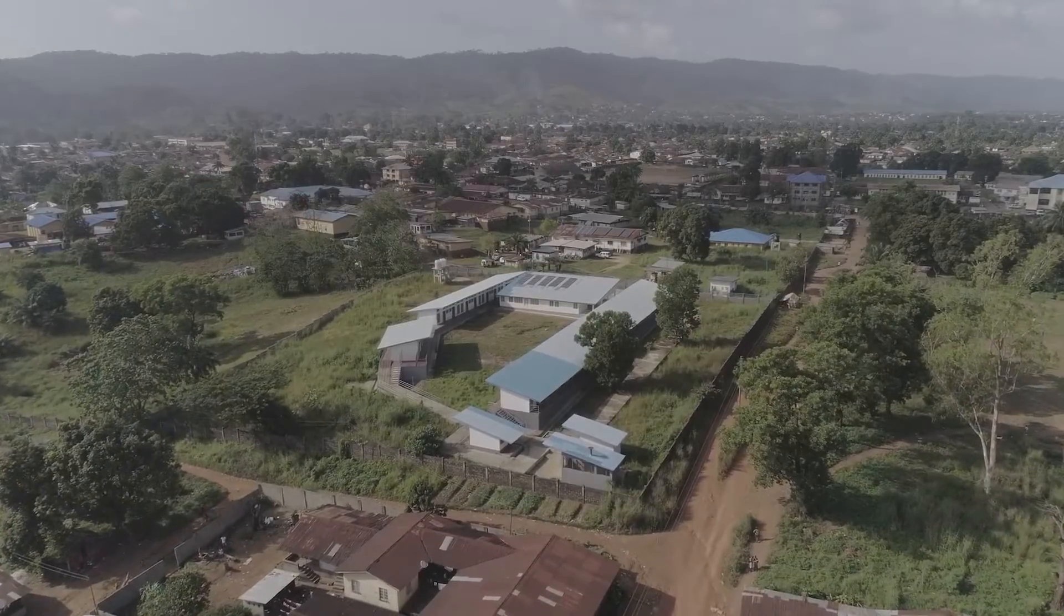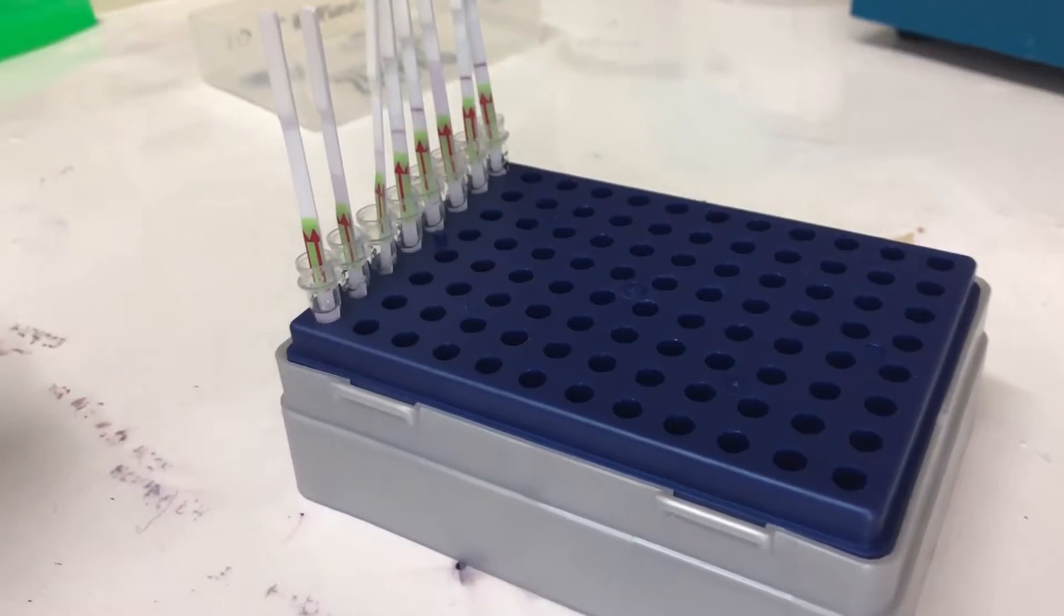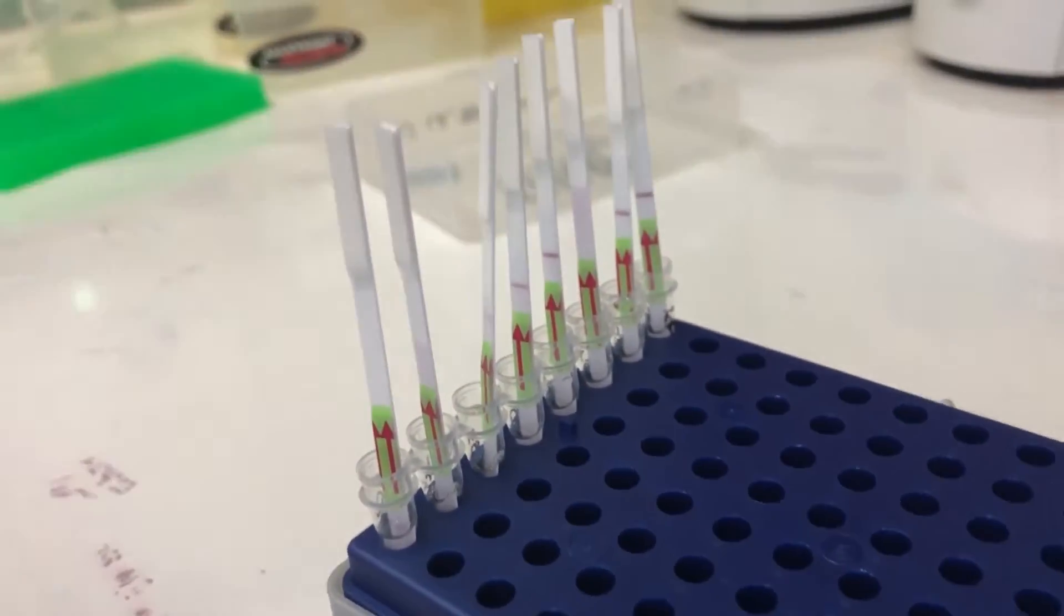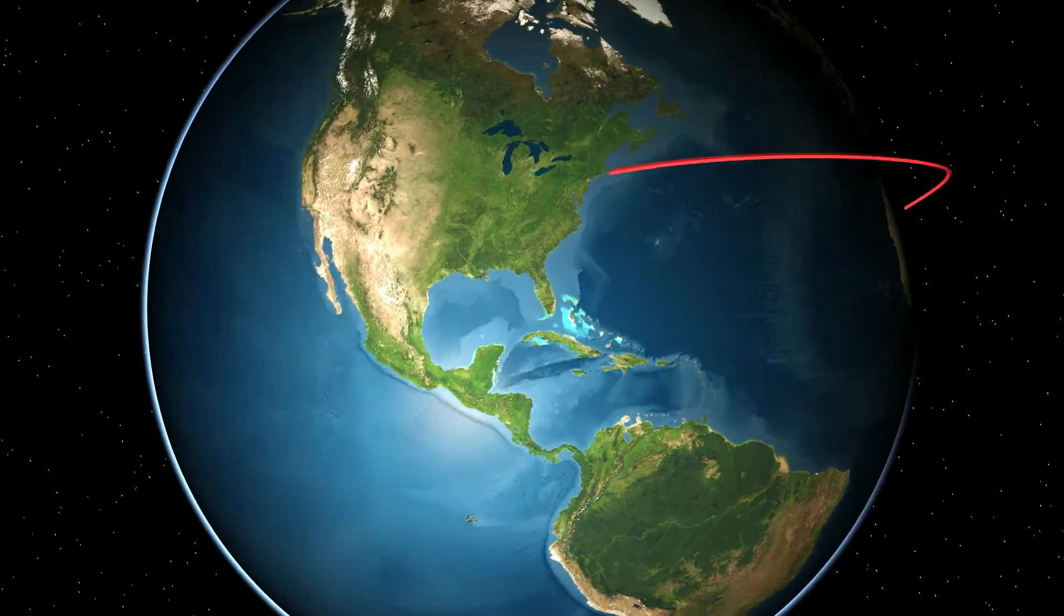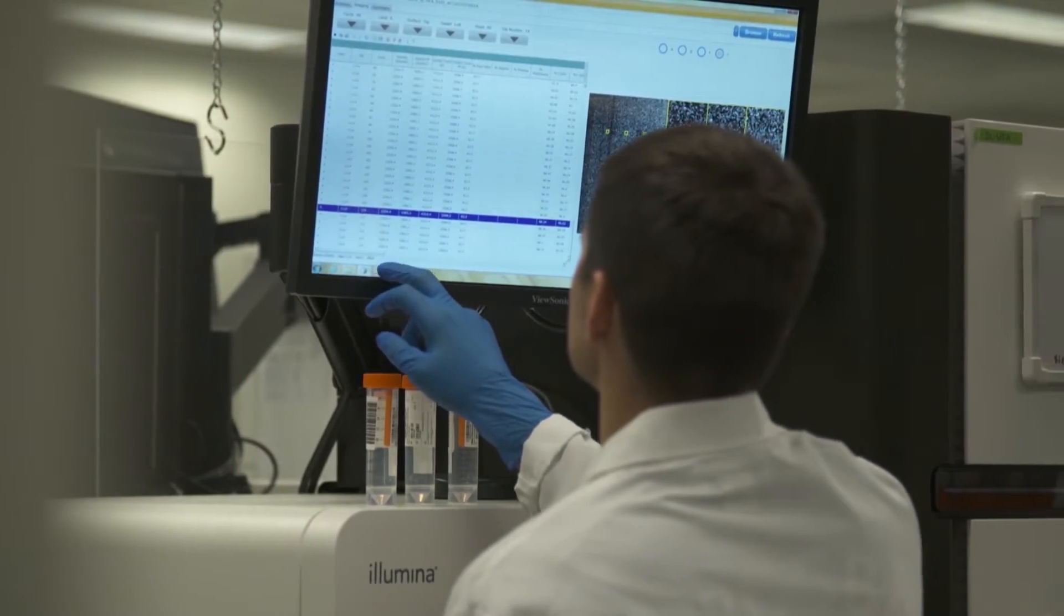So easy, in fact, SHERLOCK can be used in the field to detect emerging infectious diseases and outbreaks, like Ebola virus. Before SHERLOCK, field samples had to be refrigerated and shipped to labs with expensive gene sequencing equipment.